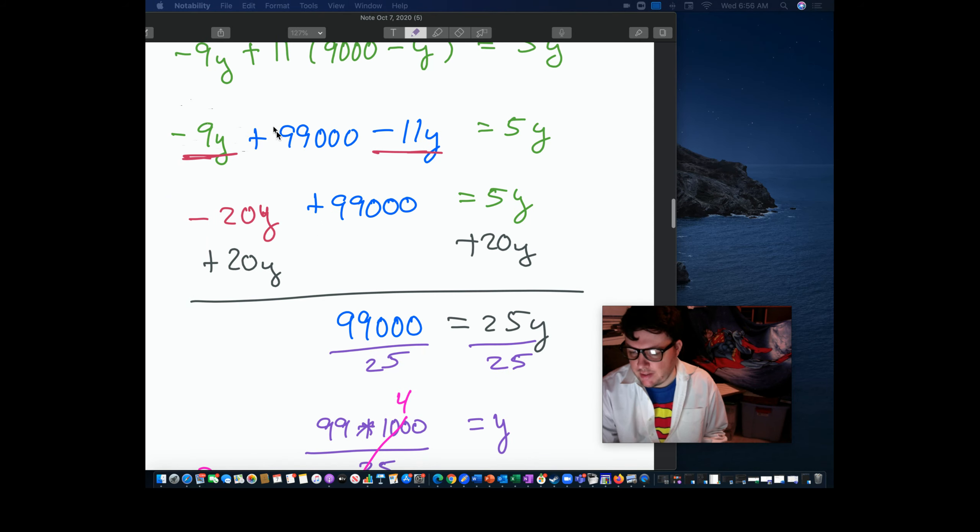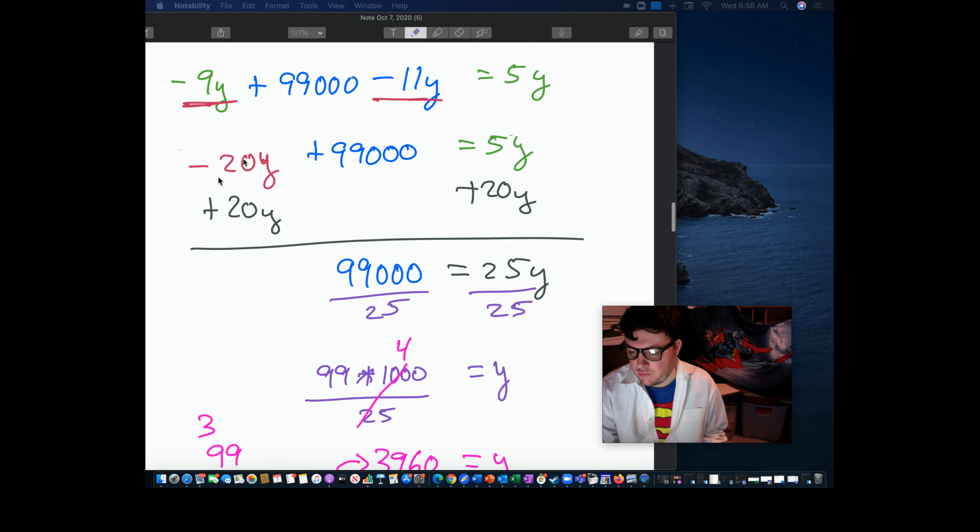We see we have negative 9y and negative 11. I put those together, get negative 20y. Negative plus a negative is giving me more negative. I see I have 5y and negative 20y. Combine like terms. Add the 20y over.